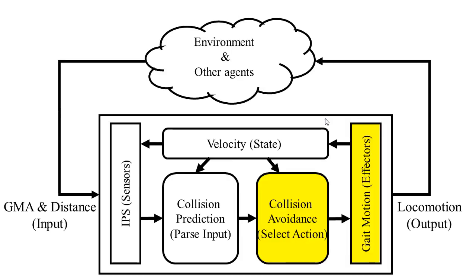A proper action to avoid collision would be selected to change the GMA of other agents or the distance to other agents leading to collision avoidance.